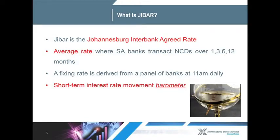You're going to be asking me, what is JIBAR? JIBAR is the Johannesburg Interbank Agreed Rate, and it's effectively the average rate where South African banks borrow and lend money to their clients over various terms: 1, 3, 6, and 12 months. Every day, that rate is fixed by a panel of banks at 11 a.m. Effectively, what we do with that rate is it becomes a barometer for short-term interest rates and a benchmark for a number of products, including ours, that are used to hedge interest rate risk. Some of those products you would have heard of — they're called swaps and FRAs — and we use it for the JIBAR future.